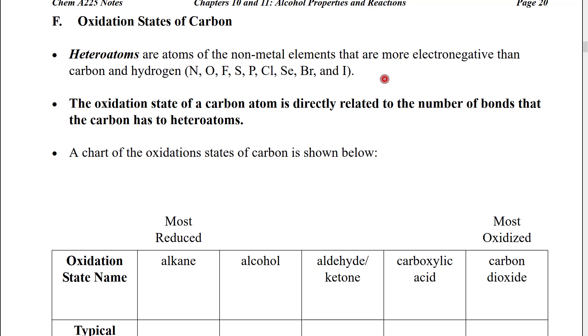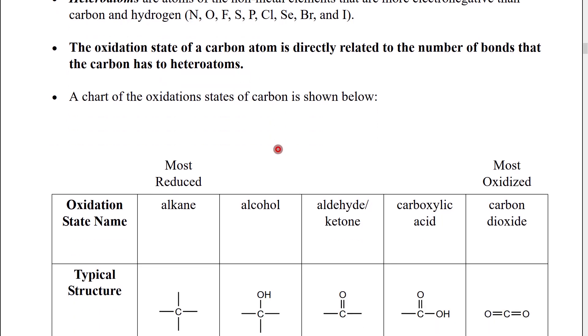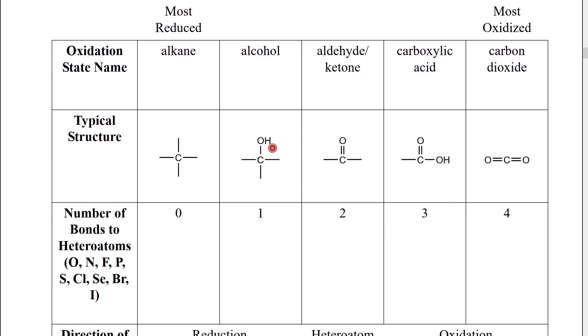What we see is that there are a wide variety of organic molecules or organic related molecules that have heteroatoms substituted in place of either hydrogens or carbons. What we find then is that the oxidation state of a carbon is directly related to the number of bonds that that given carbon has to heteroatoms. This is probably best explained with a chart.